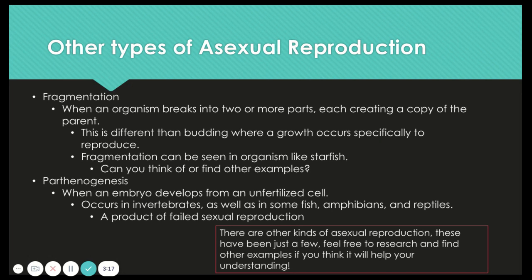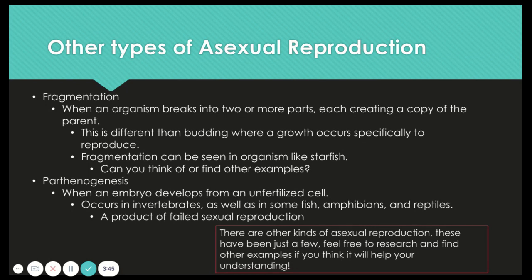Two other types of asexual reproduction are fragmentation. This is when an organism breaks into two or more parts, each creating a copy of the parent. This is different from budding, because in budding that is where growth specifically occurs with the intention to reproduce. Fragmentation is something that doesn't occur intentionally. You see it in organisms like starfish — if you break them in half, both of those halves can reproduce their cells to create a copy of themselves. So you take one starfish, break it in two, you end up with two starfish that are exactly genetically identical but are two separate organisms.